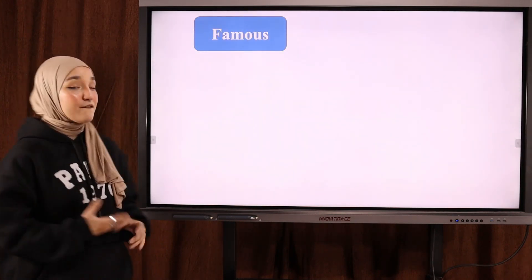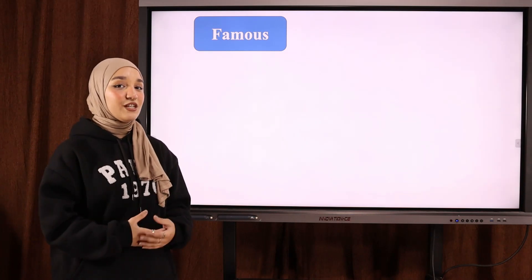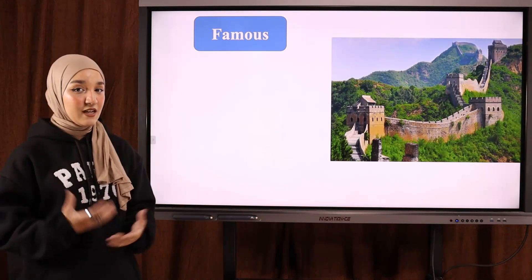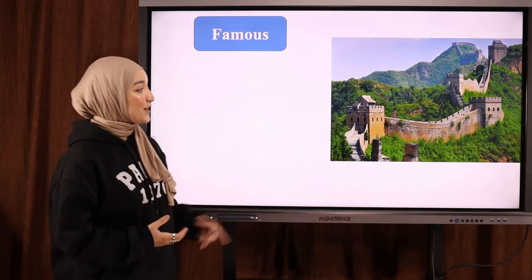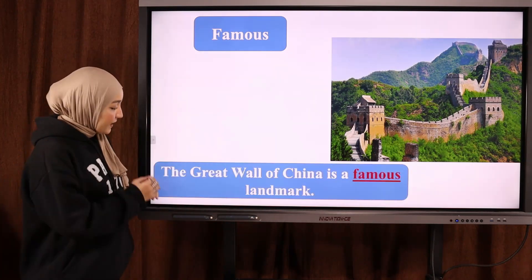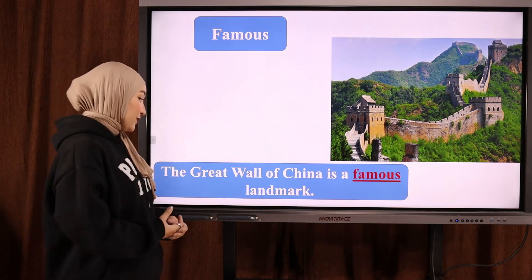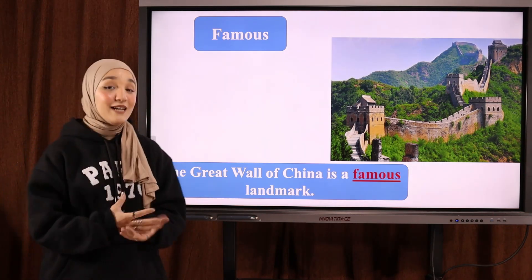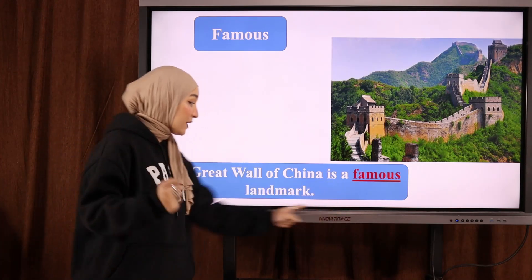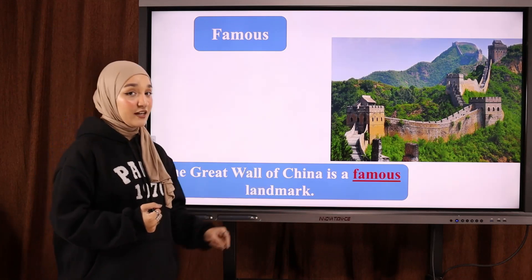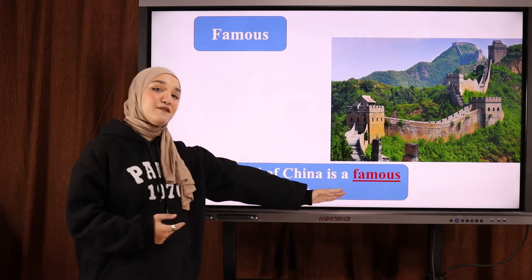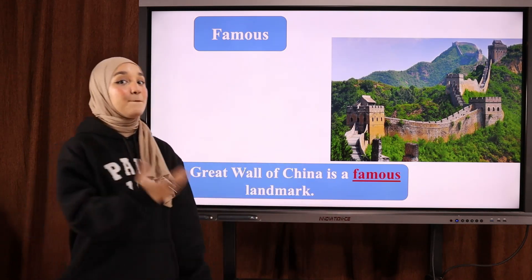The next word is 'famous' — مشهور أو معروف. It's an adjective. Example: 'The Great Wall of China is a famous landmark' — سور الصين العظيم. So 'famous' is an adjective we use to describe something as well-known — مشهور.